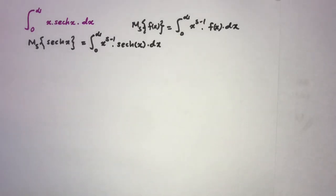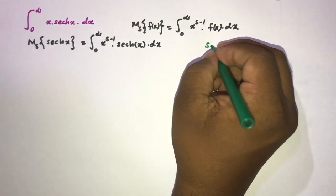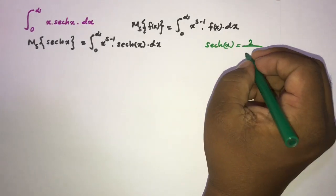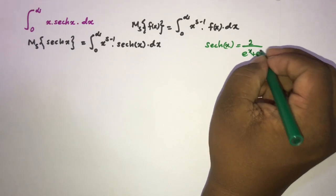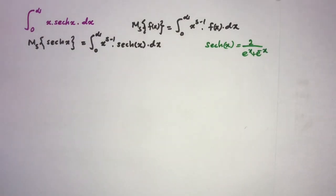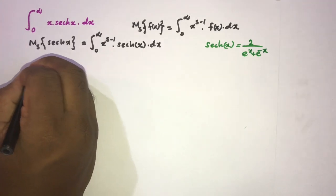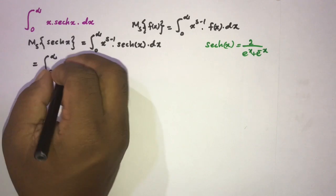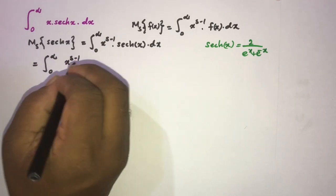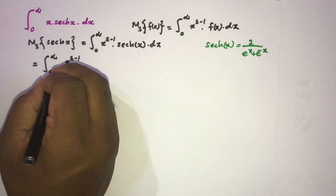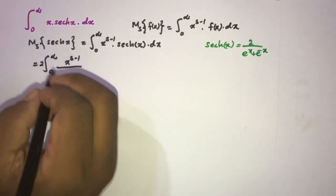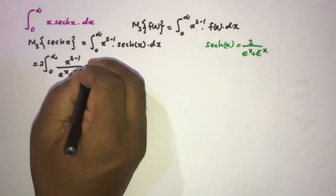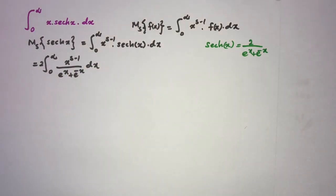We know the definition of hyperbolic secant of x: sech(x) = 2 / (e^x + e^{-x}). So we can write this as the integral from 0 to infinity of x^{s-1} times sech(x), pulling the 2 outside the integral sign, divided by (e^x + e^{-x}) dx.